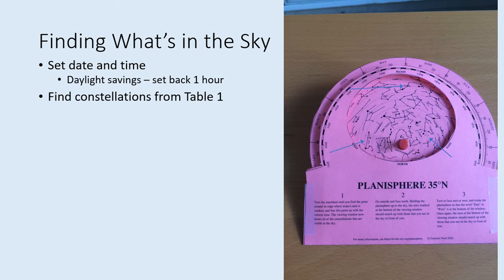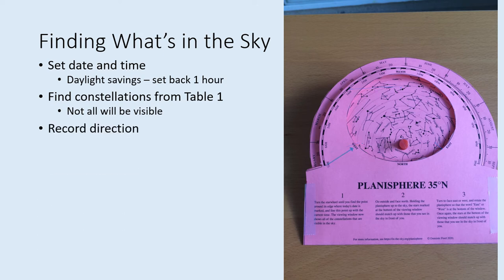If you're using an app, you may want to use a wide field of view so that you can see the whole sky at once. You won't find all of the constellations from the table up at once — usually two or three will be visible at any one time. Use the app or planisphere to decide what part of the sky each of the ones you can see will be in. If it's near one of the horizons, give a direction like south or northeast. If it's near the center of the view of the whole sky, say it's straight up.